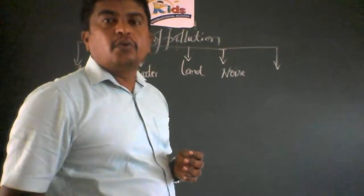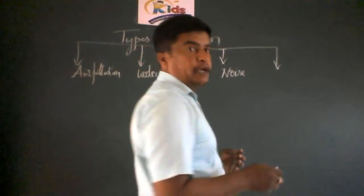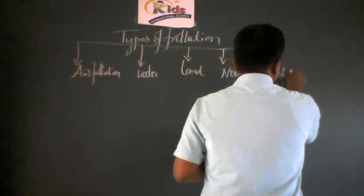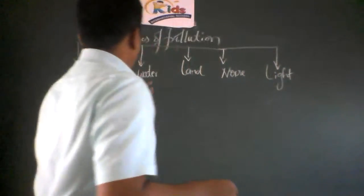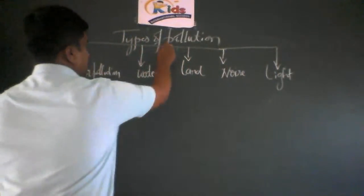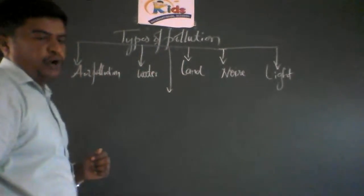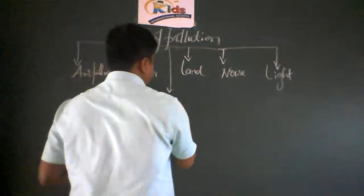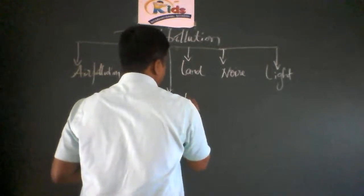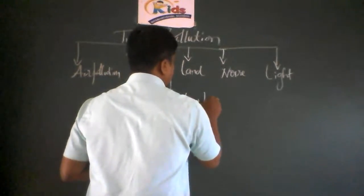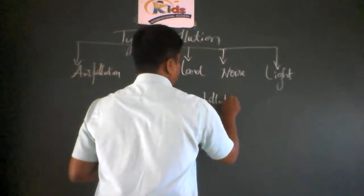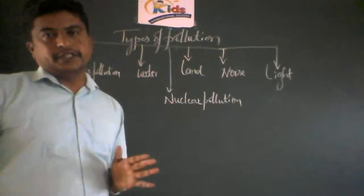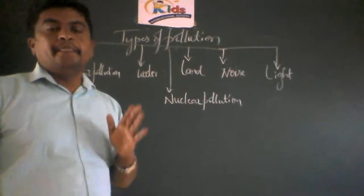After light pollution, we have nuclear pollution — which is very important. These are the six most important types of pollution: air, water, land, noise, light, and nuclear. Now we shall study each and every pollution deeply.